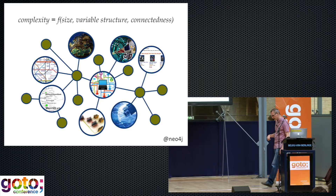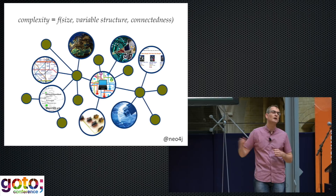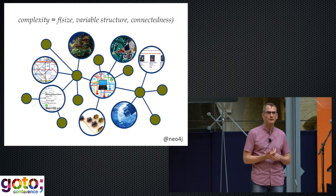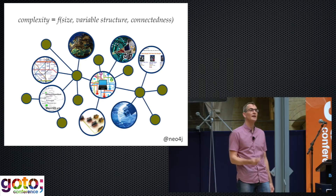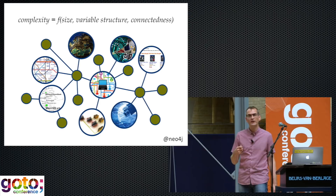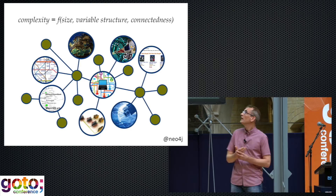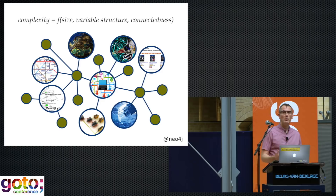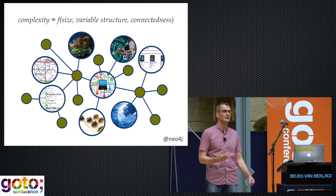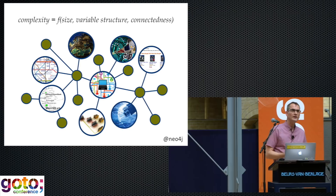What is it about graphs and graph technology that makes them such a dominant, albeit hidden, force? For me, at the highest level, it's about managing complexity and complex data. The data we have today — or rather the ways in which we use that data — is more complex than ever before. That complexity is a function of at least three things: increased data size, an increase in variable structure, and an increase in connectedness. When these three forces come together, we're dealing with extremely complex data: large volumes of variably structured, densely connected data.